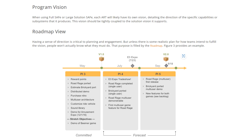You need to have a roadmap view. If you look at that picture, it shows PI 3, PI 4, and PI 5 — what we are trying to achieve in each PI and what milestones we are trying to achieve, such as E3 Expo in July 2023. Having a sense of direction is critical to planning and engagement. Unless there is some realistic plan for how teams intend to fulfill the vision, people won't actually know what they must do.